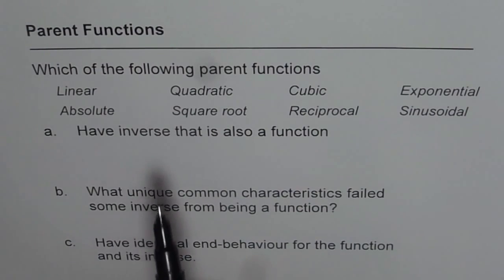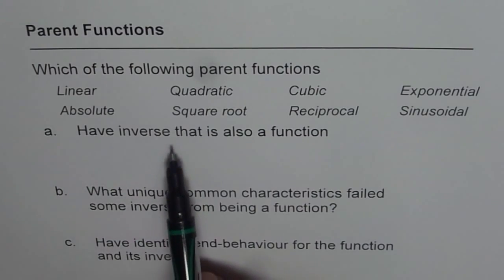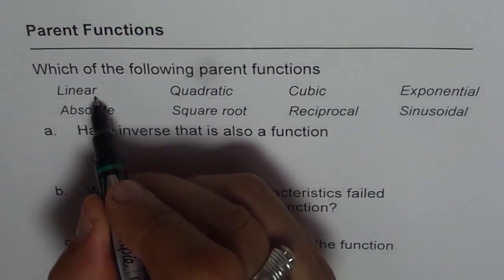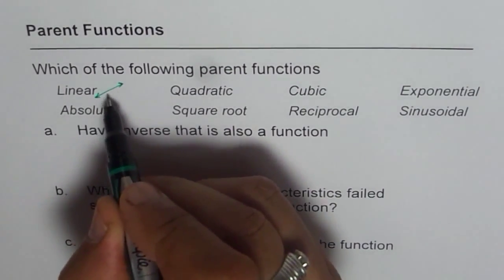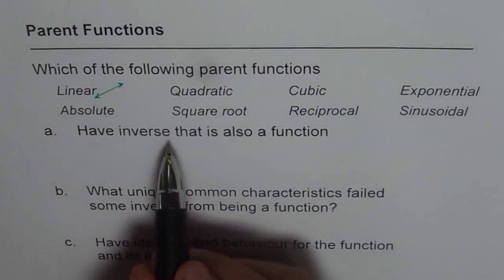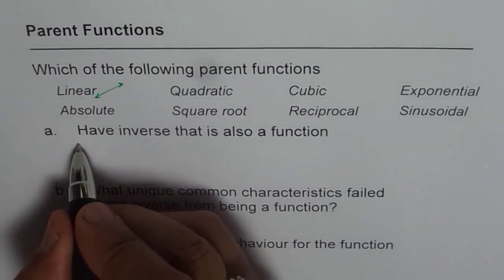So the first part is have inverse that is also a function. Linear is kind of a line, so its inverse will also be a line. So that is fine. We can write down here in our list has inverse that is a function. Linear is okay.